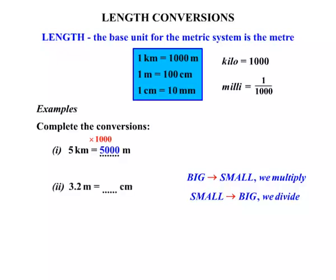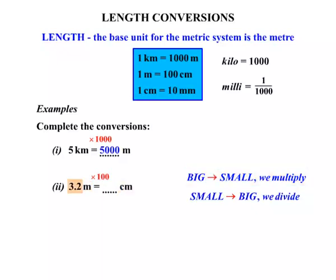Second example: three point two metres equals how many centimetres? We're changing metres to centimetres, and the connection is that one metre equals a hundred centimetres. Because we're changing metres to centimetres — something bigger to something smaller — we multiply by one hundred. Three point two times one hundred equals three hundred and twenty. So three point two metres equals three hundred and twenty centimetres.